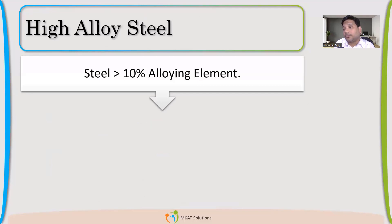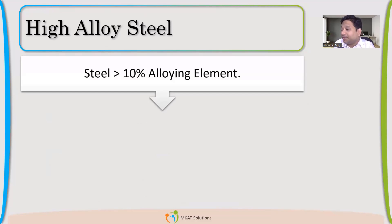Why did that name come about? Why do we call it stainless steel? Stainless steel means stainless — there is no stain. It's a very bright and clear material, stain-free. So stain-free means it does not rust. Why is that? No stain is due to chromium reacting with oxygen.